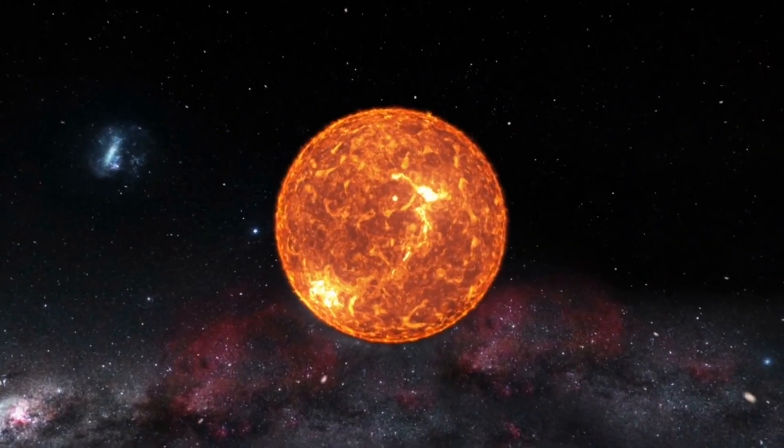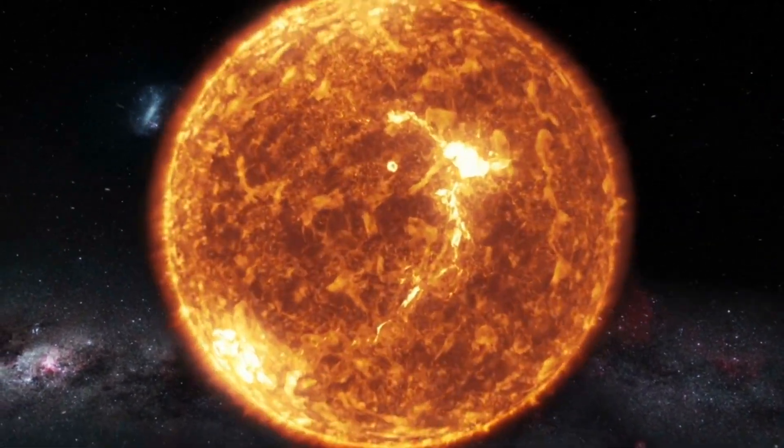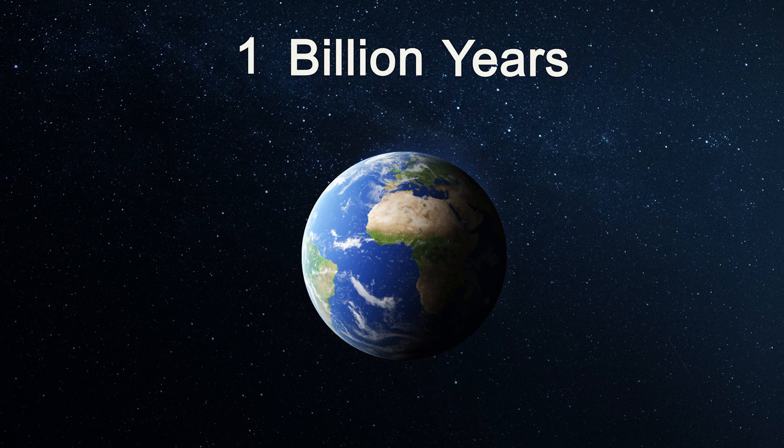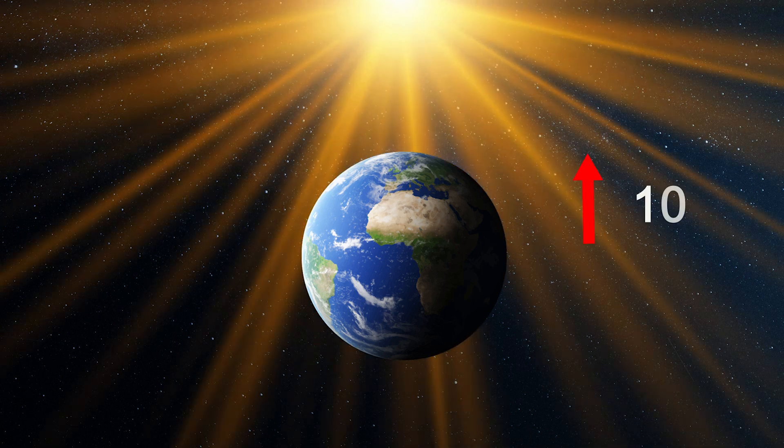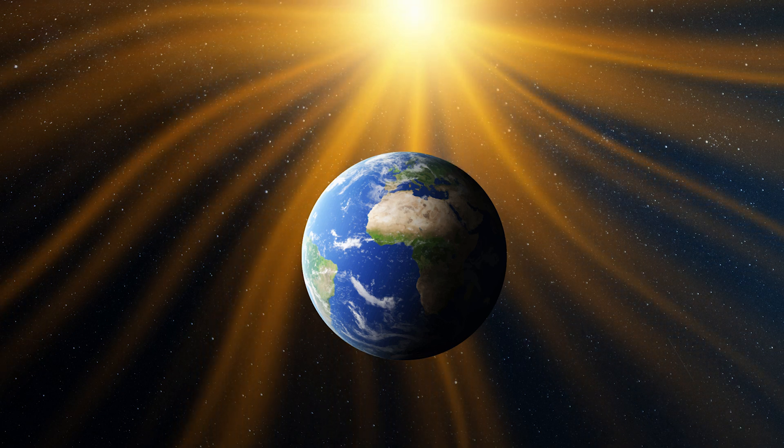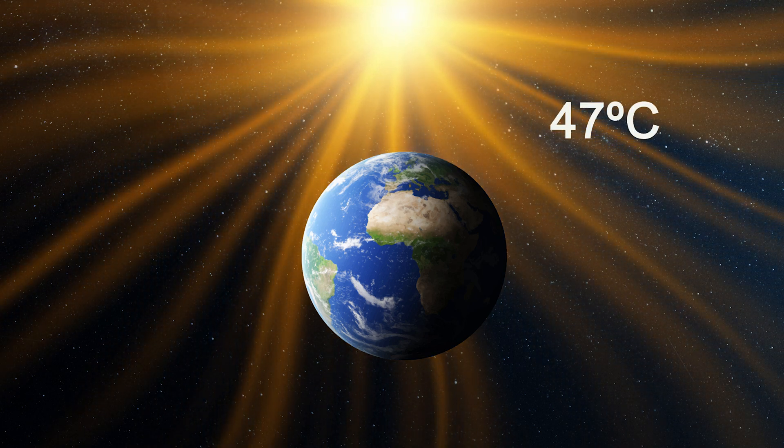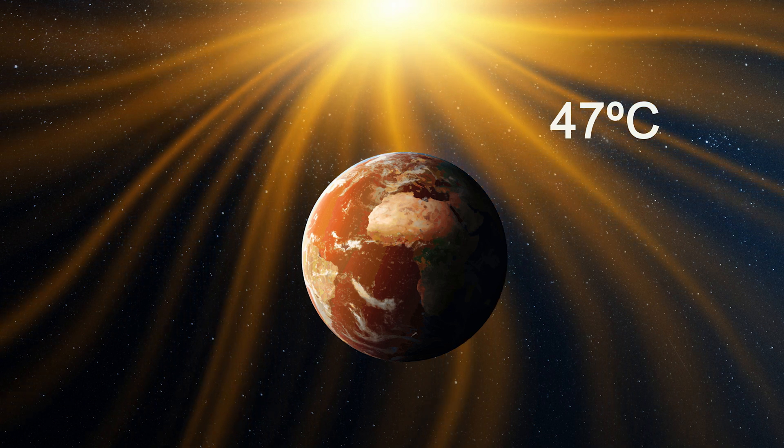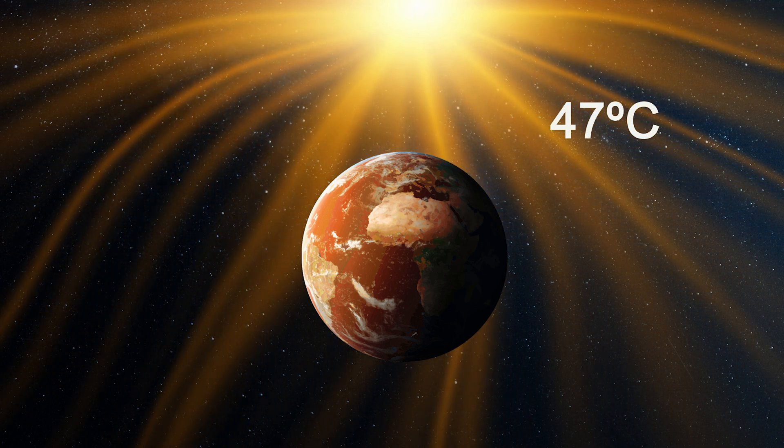But this is just the beginning. What happens when the sun starts to change? Fast forward to 1 billion years, the sun's luminosity is increased by 10 percent, causing Earth's surface temperatures to soar to an average of around 47 degrees Celsius. The oceans evaporate and the water vapor is lost to space. Life as we know it struggles to survive.